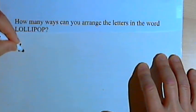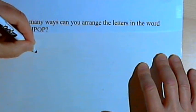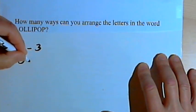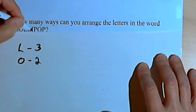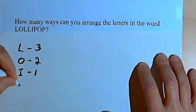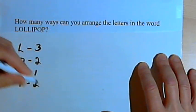We've got the letter L, and L occurs 1, 2, 3 times. We've got the letter O, that occurs 2 times. We've got I, I occurs only once.